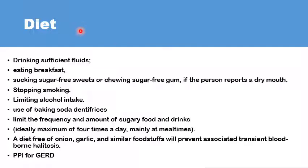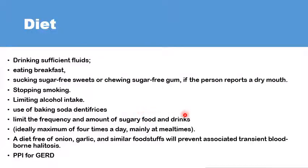Advice on diet modification can also help in the treatment of halitosis. This includes drinking sufficient fluids, not omitting breakfast, sucking on a sugar-free sweet or chewing sugar-free gum if there is a sensation of dry mouth to promote salivary production, stopping smoking and alcohol, using baking soda in toothpaste, and limiting sugary food and drinks to three or four times a day with meals. A diet free of onion, garlic, and similar foodstuffs can prevent associated transient blood-borne halitosis, and treatment of gastro-oesophageal reflux is also helpful.